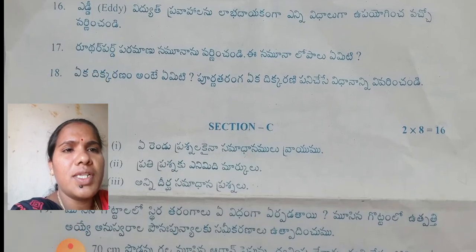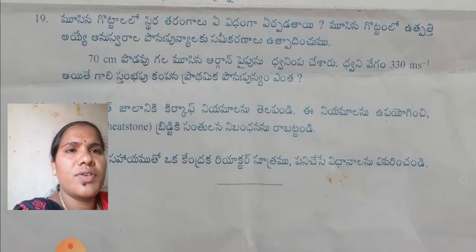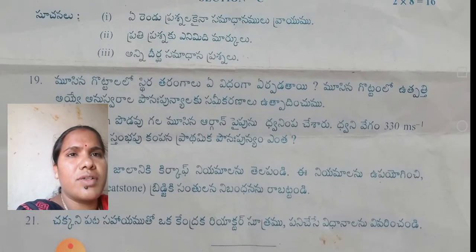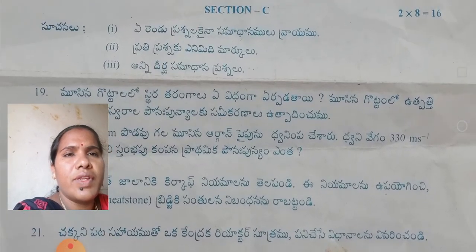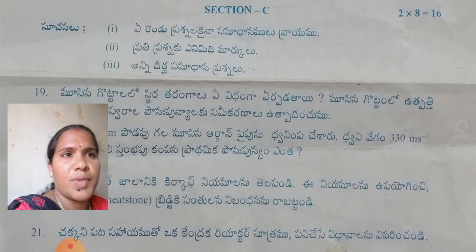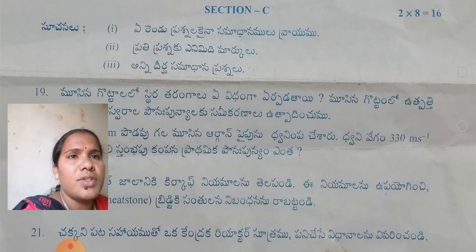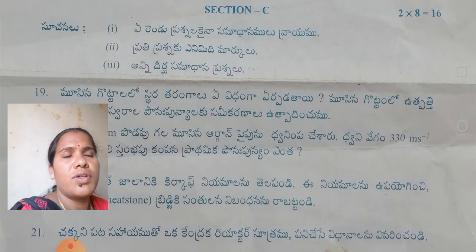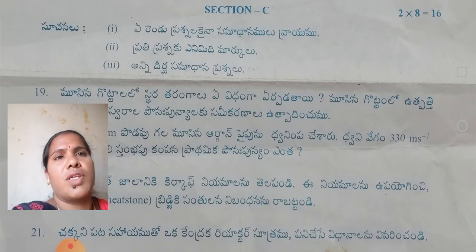For Section C, you have to attempt any two questions. Each question carries 8 marks, so 8 into 2 equals 16 marks total.